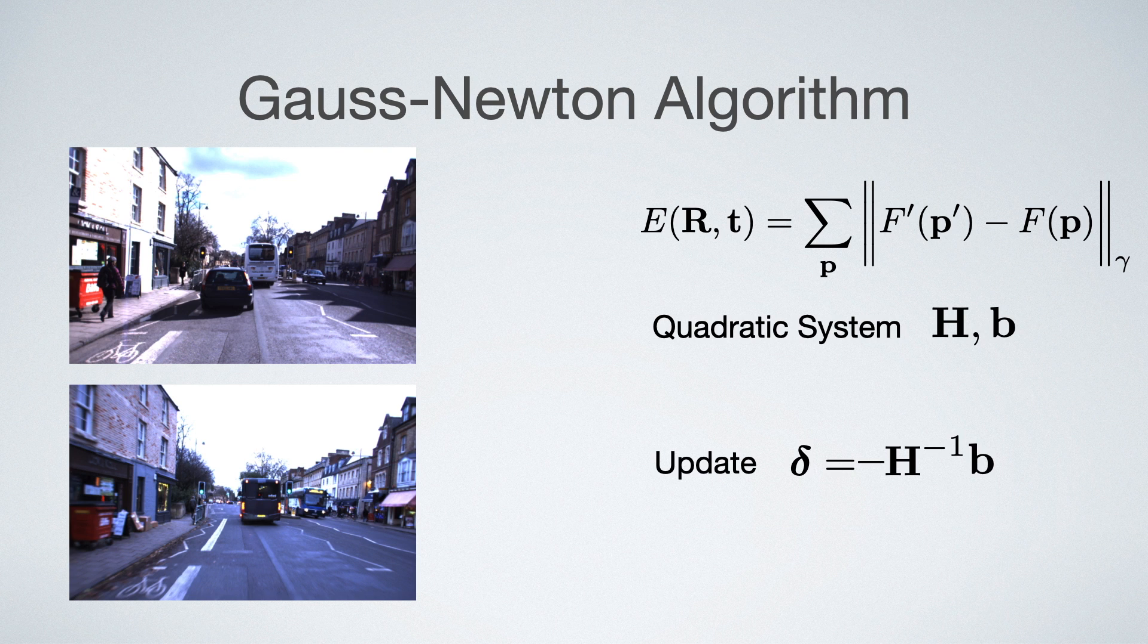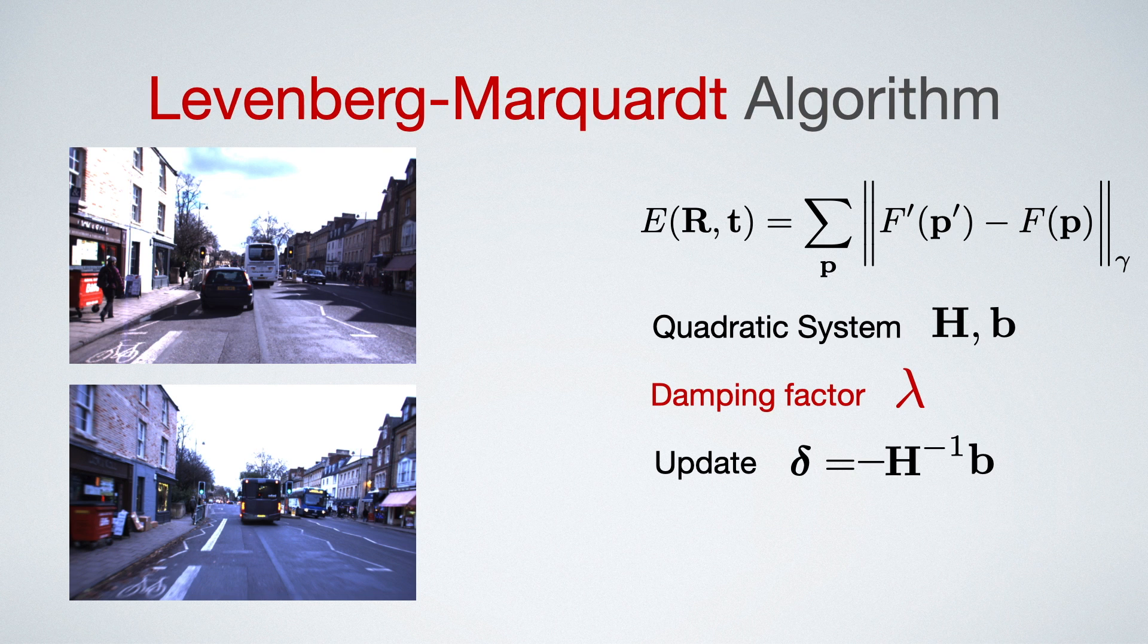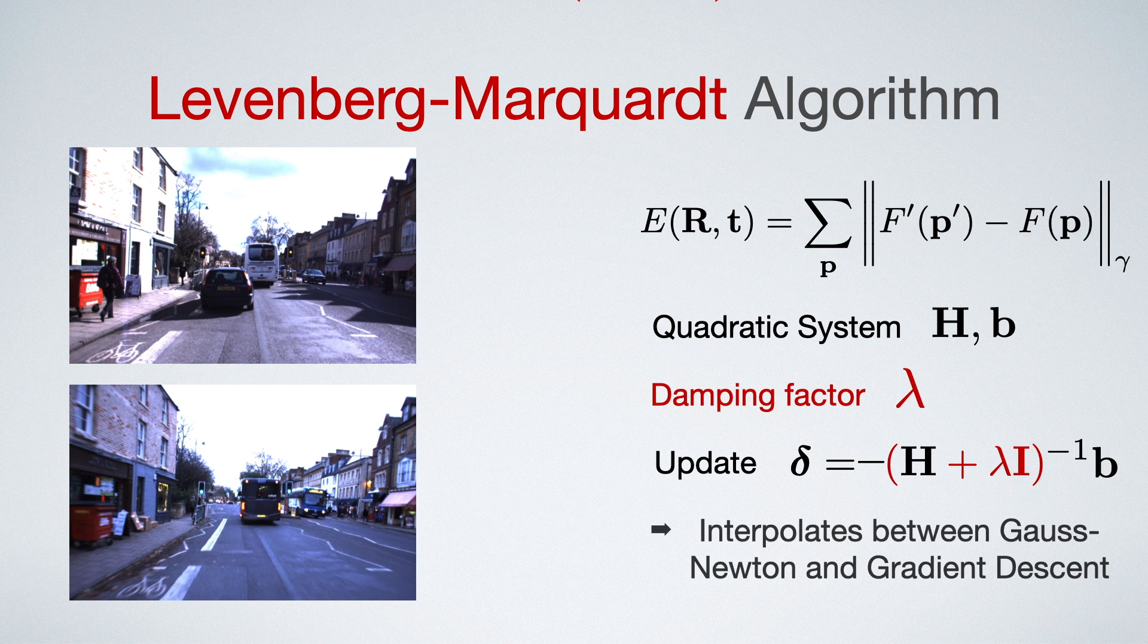Gauss-Newton converges very quickly when close to the optimum, but it struggles when initialized further away. Therefore, for direct image alignment, usually the Levenberg-Marquardt algorithm is used. It introduces the damping factor lambda and the update formula is changed like this. Lambda works as an interpolation factor between Gauss-Newton and gradient descent and is adapted on the fly.